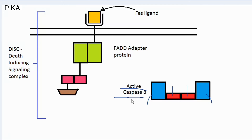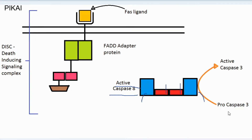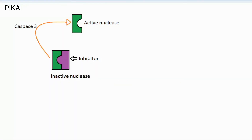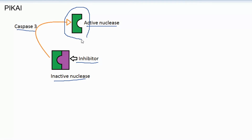Active CASPASE8 converts PROCASPASE3 into active CASPASE3, which is almost the final step of the extrinsic apoptosis pathway. CASPASE3 then activates the nuclease: the nuclease was previously inhibited by an attached inhibitor, but CASPASE3 removes that inhibitor, converting it to its active form. The active nuclease then digests the nuclear material inside the cell.